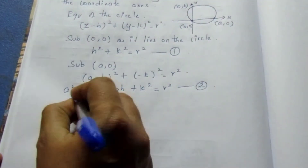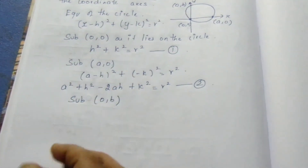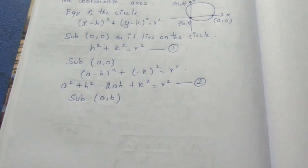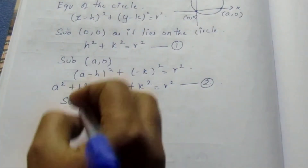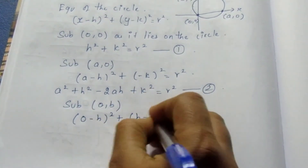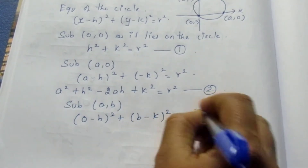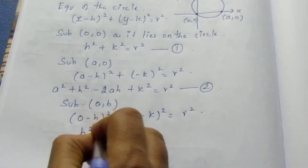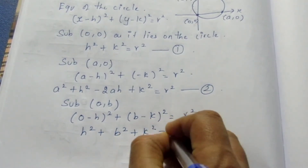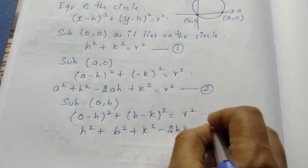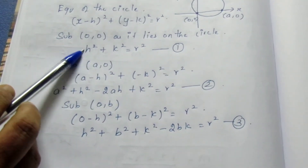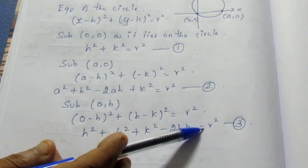For the third equation, substitute (0,B) in place of x and y. It becomes (0 - h)² + (B - k)² = r², which gives h² + b² + k² - 2bk = r². All three equations are equal to r².